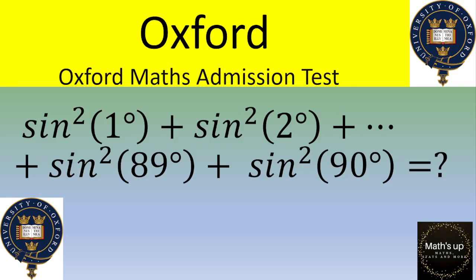Hello and welcome. In this video, we work on an exercise given during the Oxford Math admission. The exercise is to calculate the sum of sine squared 1° + sine squared 2° + ... + sine squared 89° + sine squared 90°. If you want to give it a try, please pause the video; otherwise, let's see the solution.